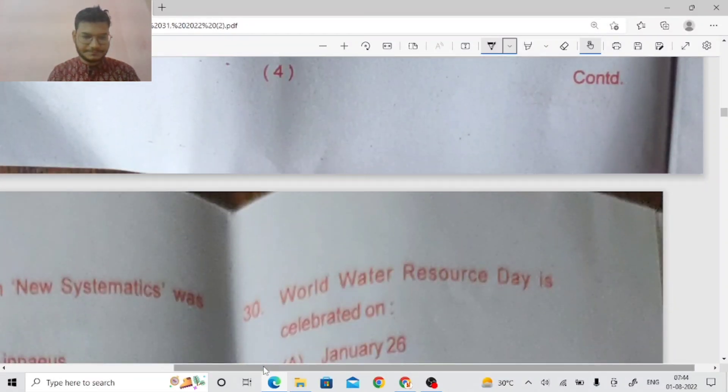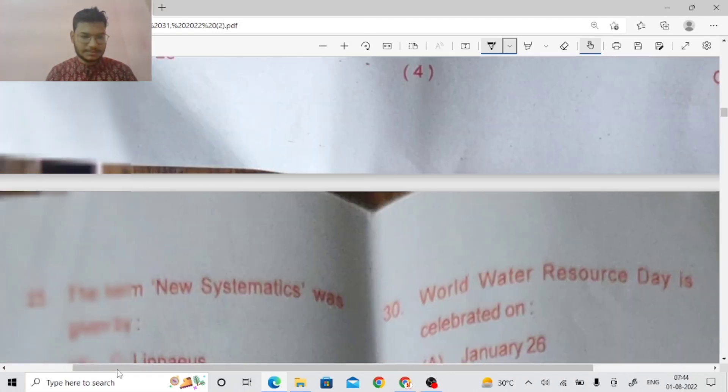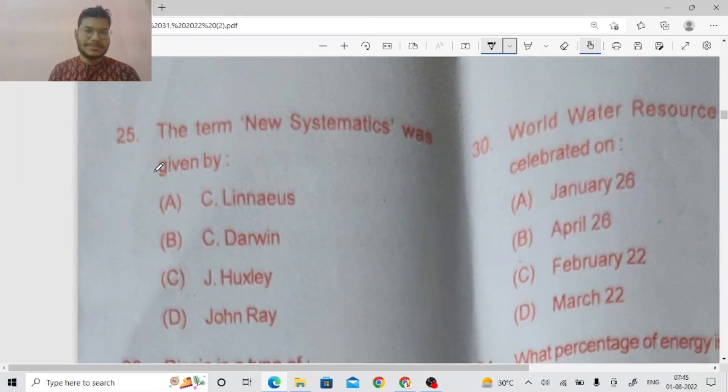Next question number 25. The term new systematics was given by, term new systematics was given by J. Huxley is the right answer.